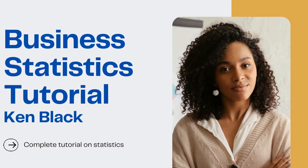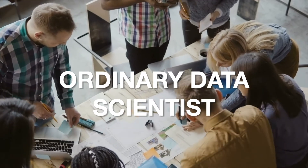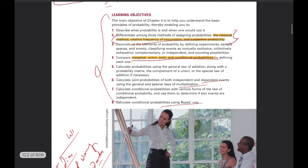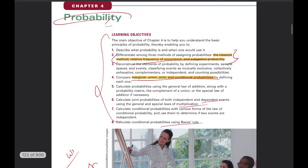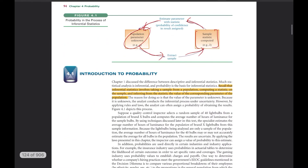Hello everyone, welcome back to my channel 'Ordinary Data Scientist' where we talk about data science. In previous lectures we were looking at concepts from Chapter 4 on probability — different kinds of concepts like how to calculate probability, what probability means, and what things we need to consider while calculating it, including business and statistical use cases.